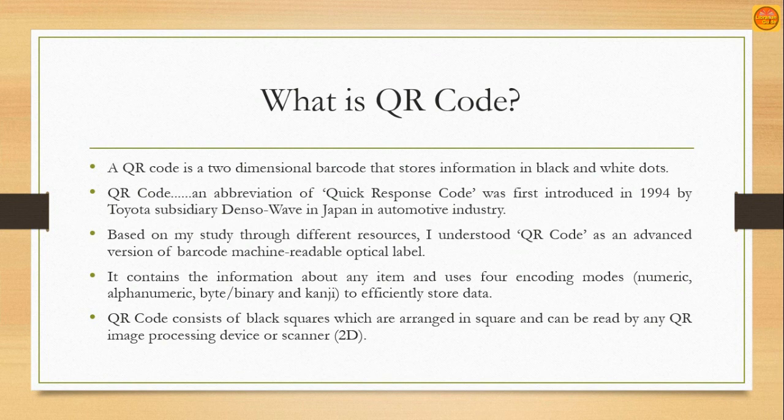The QR code contains information about any item or user. Four encoding modes are used — numeric, alphanumeric, byte or binary, and kanji — to efficiently store data. I will be showing you how to generate a QR code, how to add information to it, and then how we can use it for different purposes, and how the end user can view it when the QR code is disseminated or circulated.